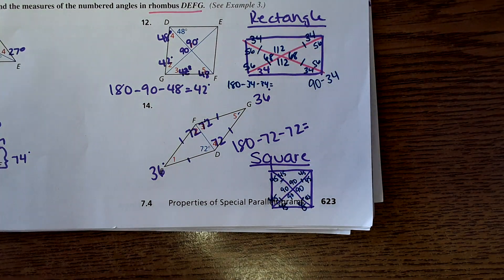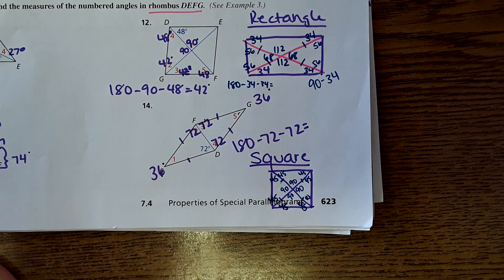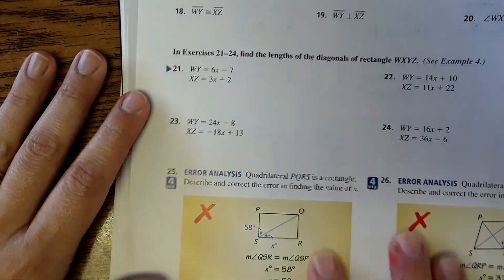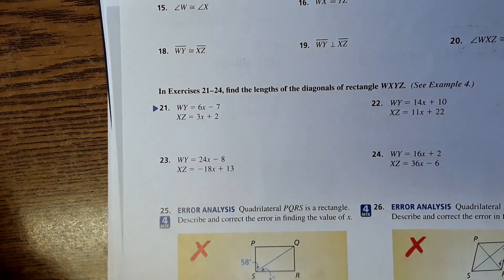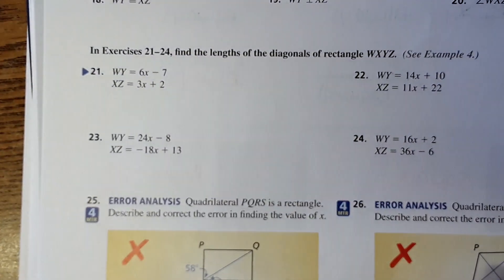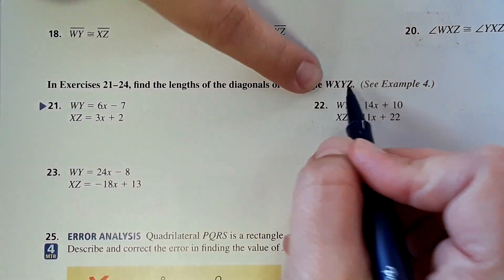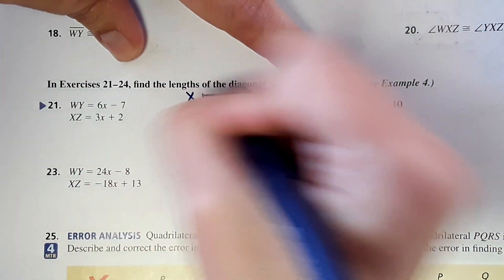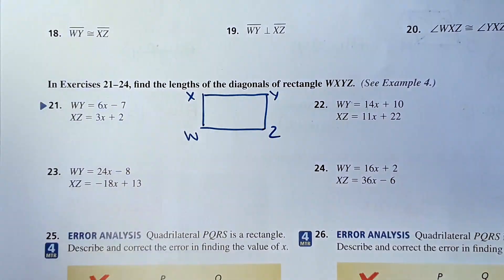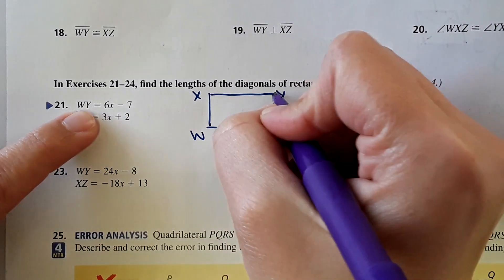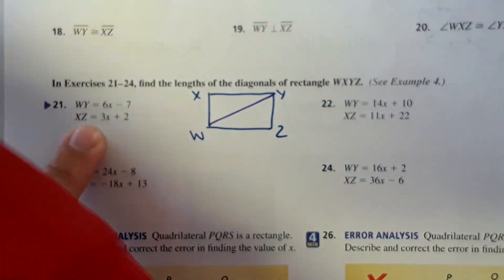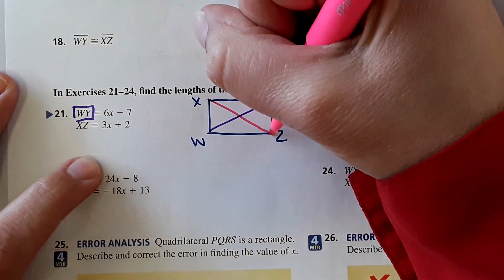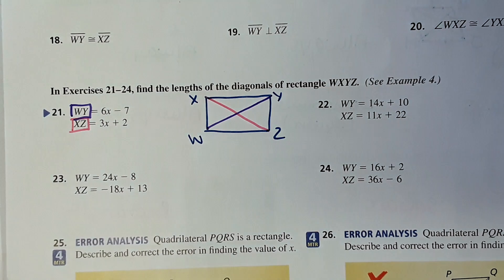We're going to look at one on the back as well. Just one. Go on the back. We're just going to do number 21 because there's one like this in the homework bank. Find the lengths of the diagonals of the rectangle right here. They don't show us the rectangle, so we'll just sketch it out so we know what the heck they're talking about. W, X, Y, Z. It says WY. So it's talking about the diagonal here. And so this would be WY, and XZ right here.